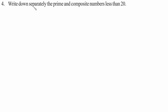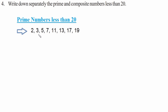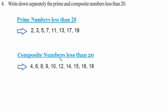Question four: write down separately the prime and composite numbers less than 20. Prime numbers less than 20 are: 2, 3, 5, 7, 11, 13, 17, and 19. Composite numbers less than 20 are: 4, 6, 8, 9, 10, 12, 14, 15, 16, and 18.